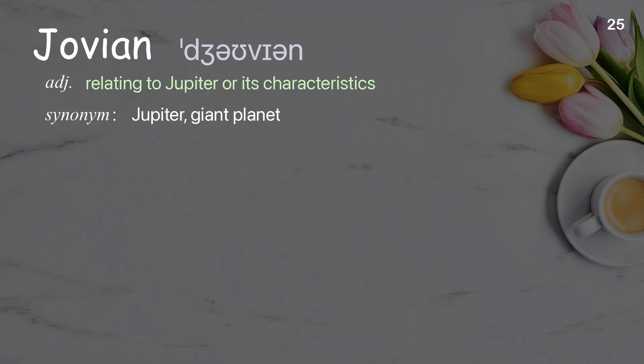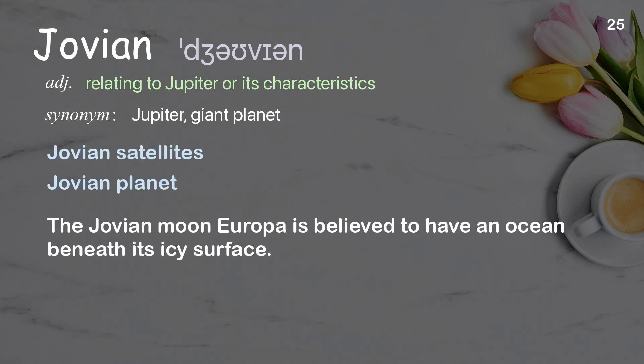Jovian: relating to Jupiter or its characteristics. Examples: Jovian satellites; Jovian planet. The Jovian moon Europa is believed to have an ocean beneath its icy surface.